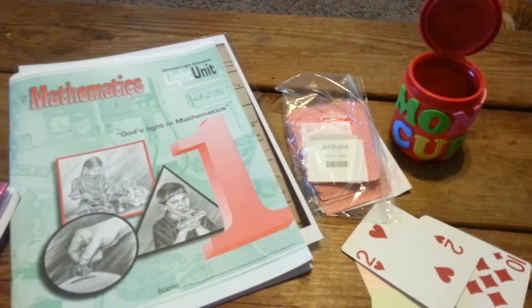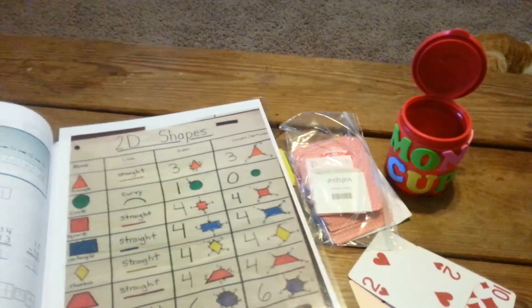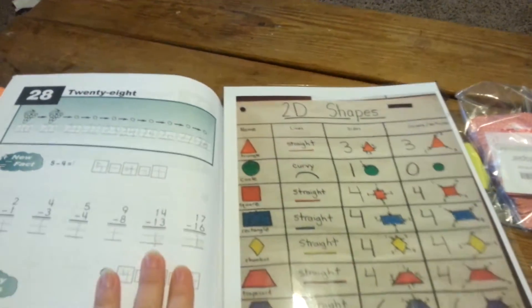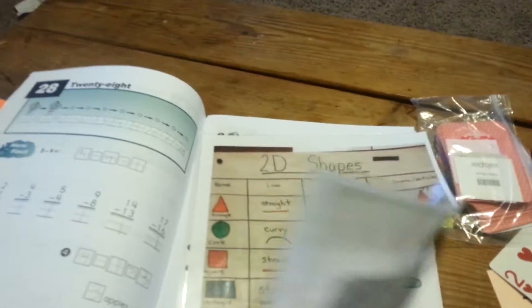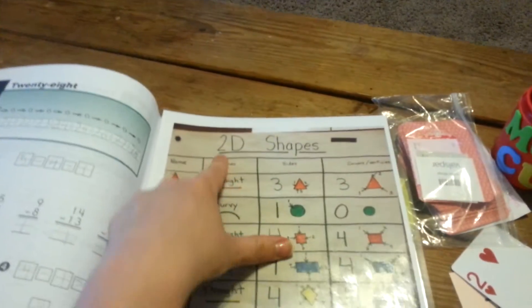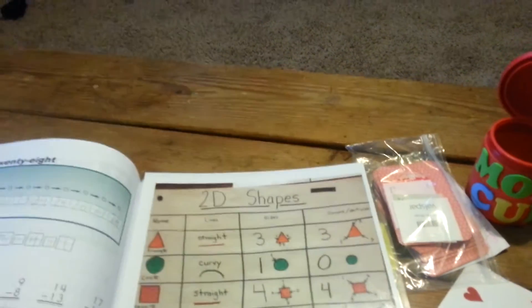Let me move this. Then it's his math. So he did his lessons for CLE and he did lesson 28. And he also did lesson 29 today. And he also does speed drills there in the back. We also go over the shapes, how many lines, how many corners, etc.